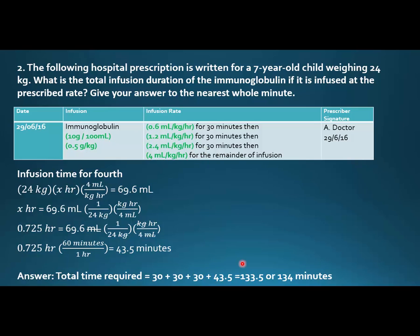We already had 90 minutes from the first three 30-minute segments, so we add 43.5 minutes to get 133.5 minutes, rounded to the nearest whole minute as per the question — that's 134 minutes. One caveat: if you're filling in answers, make sure every answer is done properly. You could have left it at 133.5 and moved on, but we want to be attentive to exactly what the question asks.